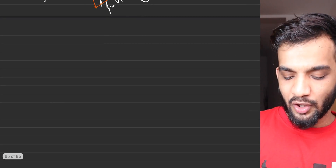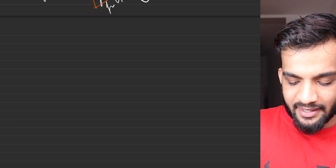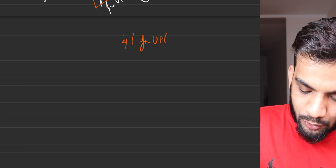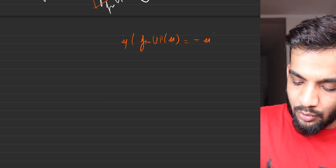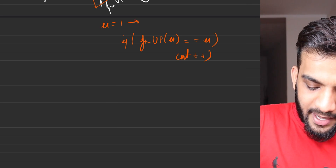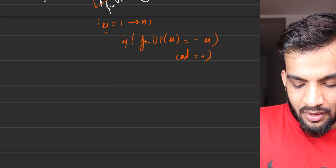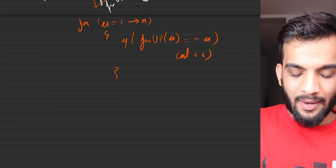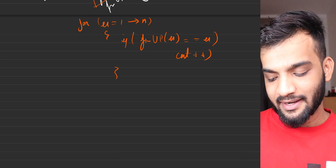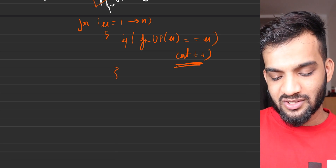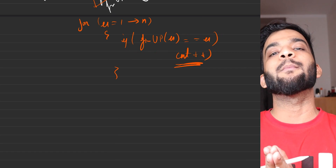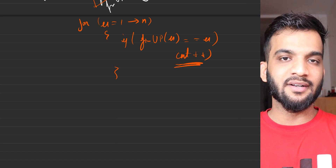So in the Disjoint Set data structure, if I simply write: if find_ultimate_parent(u) == u, do counter++, where u goes from 1 to N for a one-based indexing graph — count will be my answer. Because the number of bosses will always be equal to the number of connected components.